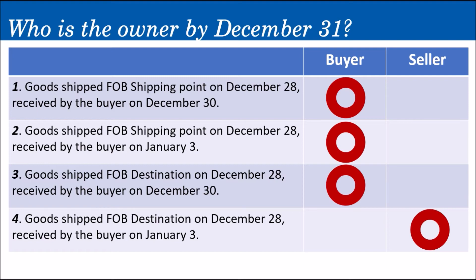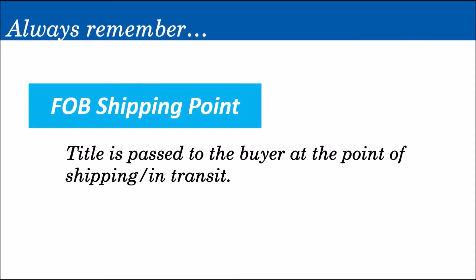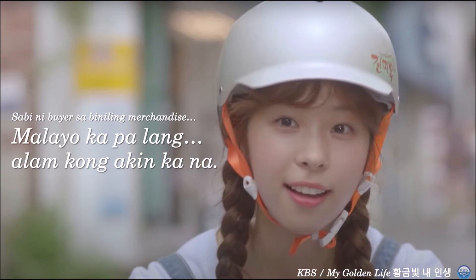I hope you understand. If you have any questions, comment them down below. To make it easier to remember the difference between FOB Shipping Point and FOB Destination: under FOB Shipping Point, the ownership or title is passed to the buyer at the point of shipping — while still in transit, it's already theirs. Far away as it may be, the buyer already knows it's theirs. So always remember: under FOB Shipping Point, the buyer says to the purchased merchandise, 'Even from far away, I already know you're mine.'